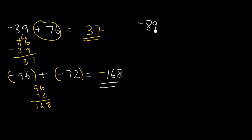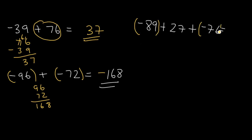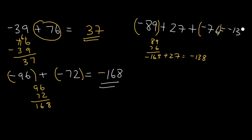Work on this problem: negative 89 plus 27 plus negative 76. Let's start by grouping the negative numbers together and adding. 89 plus 76 gives us 165, so the result is negative 165, because we're adding two negatives. Next, add 27 to negative 165. 165 minus 27 is 138, and since 165 is negative, the final answer is negative 138.